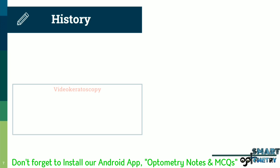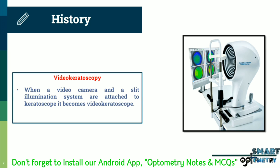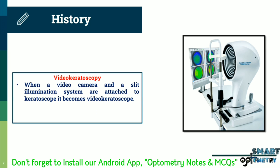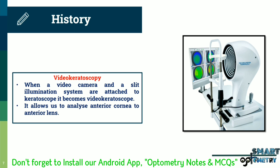Video keratoscopy, also known as videokeratography or VKG, is produced when a video camera and slit illumination system are attached to the keratoscope. It allows us to analyze from the anterior cornea to the anterior lens. Modern corneal topographers are actually video keratoscopes.